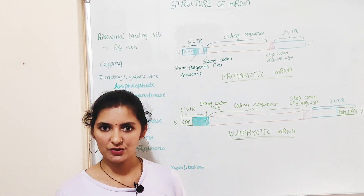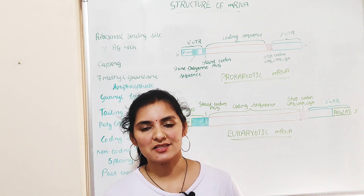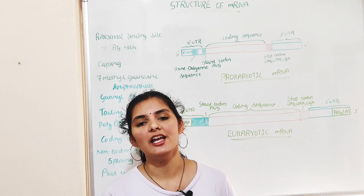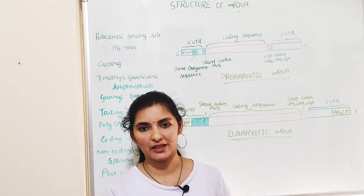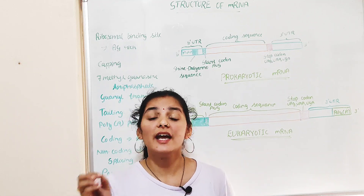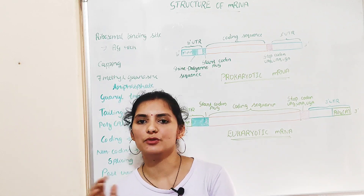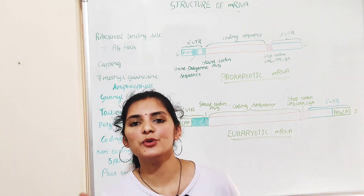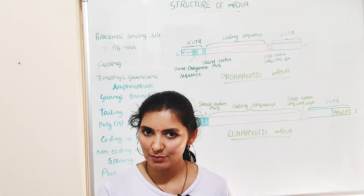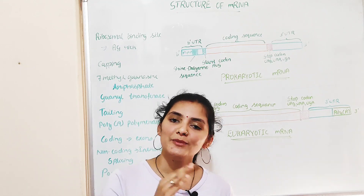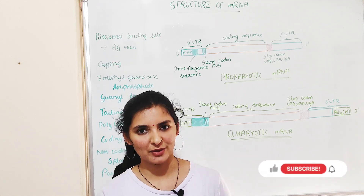Now let me talk about the functions of mRNA. mRNA plays a very important role during protein synthesis or translation. It is the only type of RNA that consists of codons complementary to the DNA sequence essential for protein synthesis. mRNA also directs and controls the addition of amino acids in the proper order and position to synthesize the required protein. mRNA carries these codons from the nucleus to the ribosome in the cytoplasm, which is the site of translation.